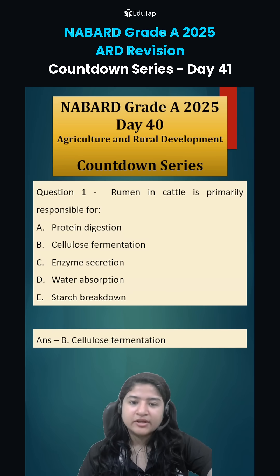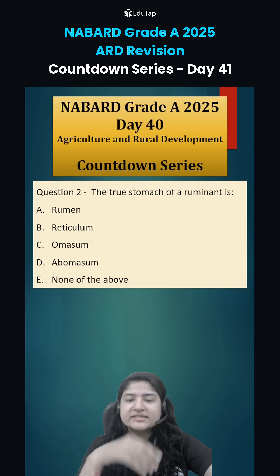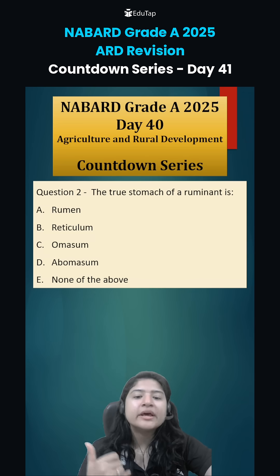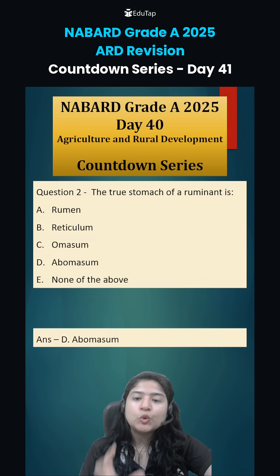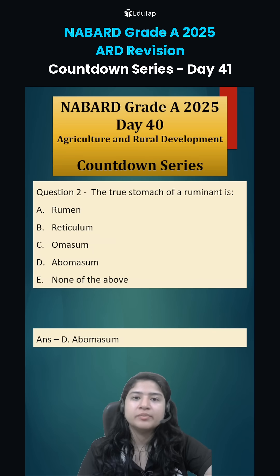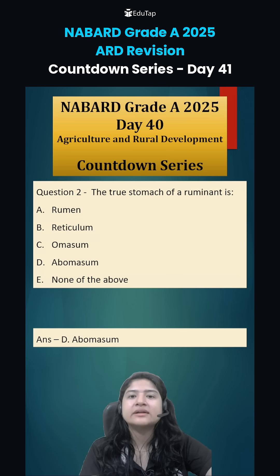So rumen's primary role is cellulose fermentation. Coming to Question 2: the true stomach of a ruminant is? As already mentioned, a ruminant has a 4-chambered stomach: rumen, reticulum, omasum, and abomasum. Among these, the abomasum is called the true stomach. This is because the chemical reactions that actually break down food components happen in the abomasum — HCl is released, pepsin is released, along with other hormones and chemicals that help break down the food.